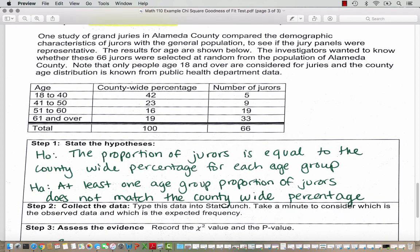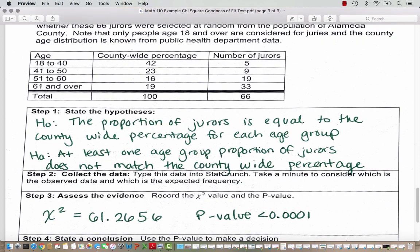This data is from the 70s, so it wouldn't match the current county-wide age percentages. Even though the age groups aren't equal width, we have the associated percentages and the associated number of jurors. Our null hypothesis is going to say that the proportion of jurors is equal to the county-wide percentage for each age group. The alternative hypothesis indicates that at least one age group proportion of jurors does not match the county-wide percentage. So now we want to input our data in StatCrunch and then do a goodness-of-fit test.